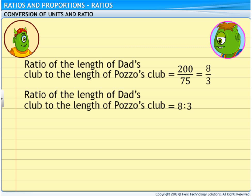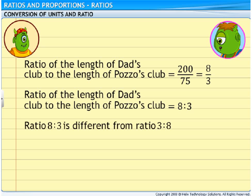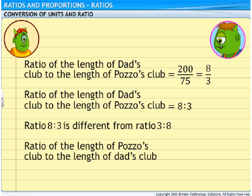So, the ratio 8 is to 3 is different from ratio 3 is to 8. Here's how I'll calculate the ratio of the length of your club to the length of my club. The answer is 3 is to 8.